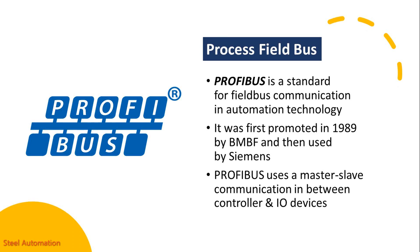Profibus uses a master-slave communication between the components of the control network. In a master-slave communication, the master includes unidirectional control on all its slave devices as well as processes. The controller is always the master whereas the I/O devices will always be slaves.